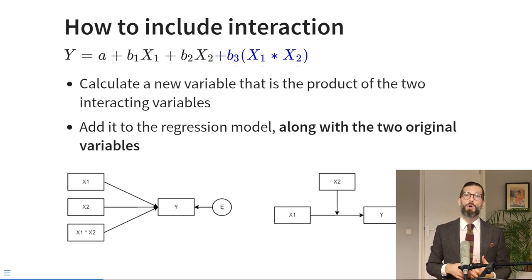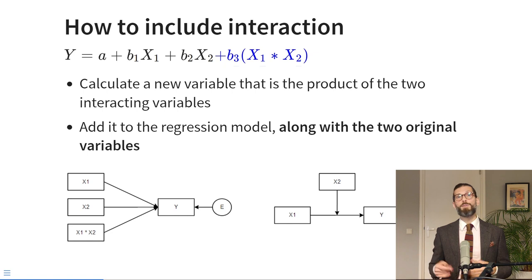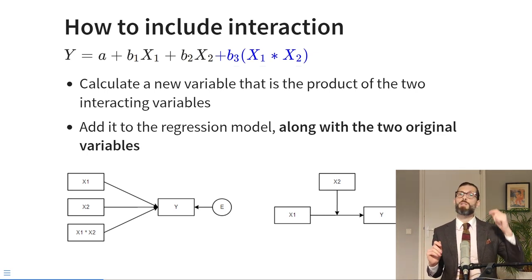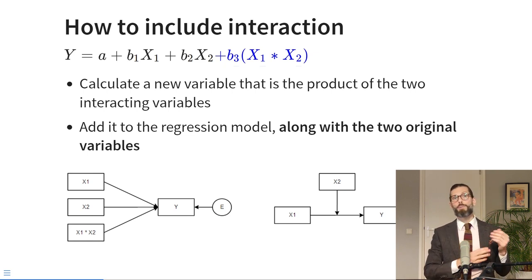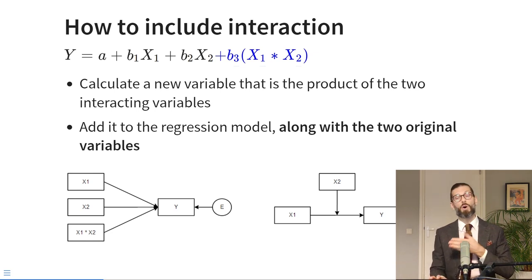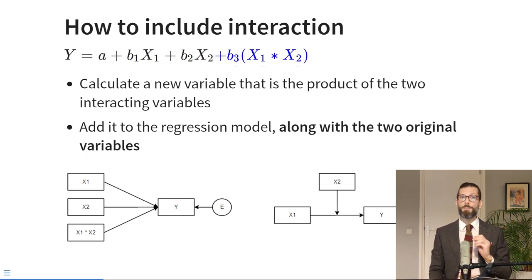In practice, you will also often see the diagram on the right to represent interaction effects, which portrays how the researcher interprets the interaction. In that diagram, x1 has an effect on y, and that effect is being modified by the interacting variable x2. The product of x1 times x2 is identical to the product of x2 times x1, which means that interactions are by definition symmetrical. So if the effect of x1 on y depends on the value of x2, that also means the effect of x2 on y depends on the value of x1.